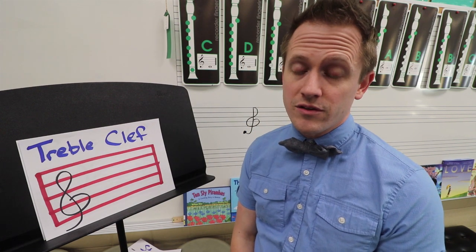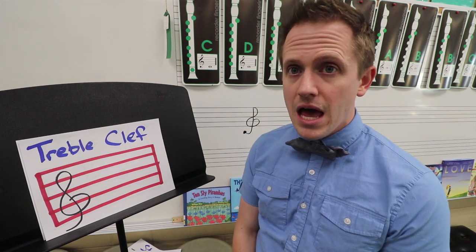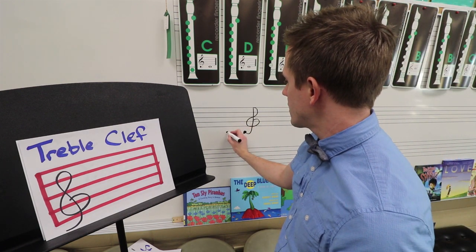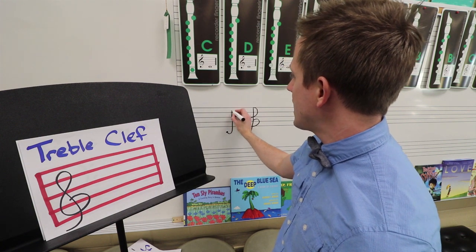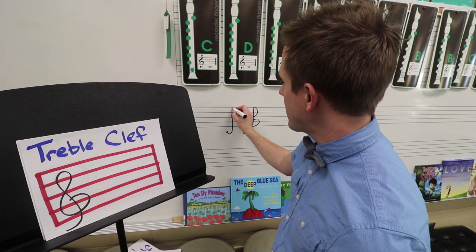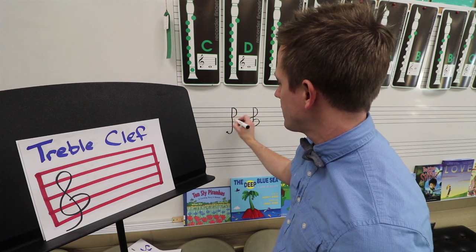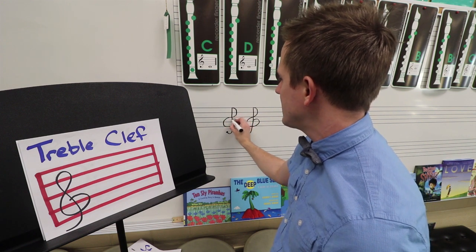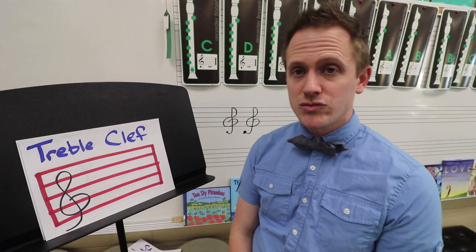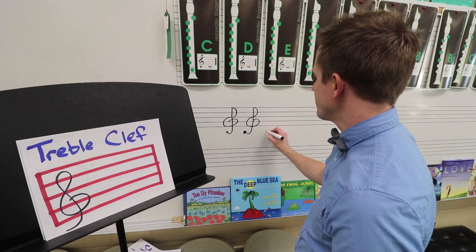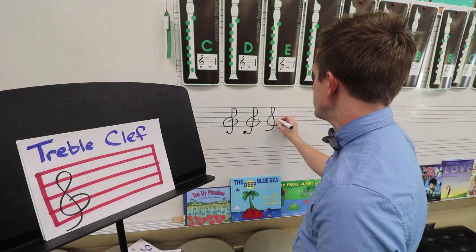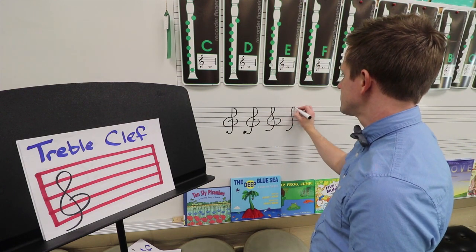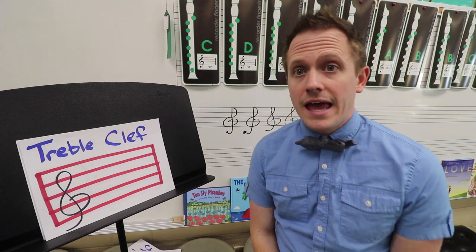This is probably going to be the most difficult symbol of notation we have to draw, so I want you to take some time and really practice. Again, you're going to start below the staff, bring it up in a straight line. Another way to think about it is it's like you're making a D here and then a big C here, and you bring it around like that. Treble clef. Draw some treble clefs on your page. Pretty soon you might be able to get more fluid with it.